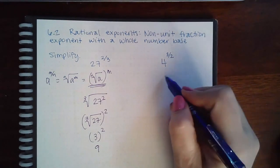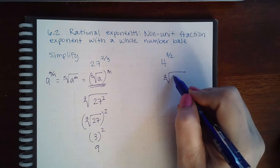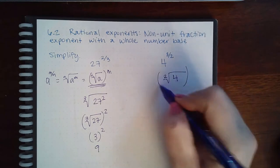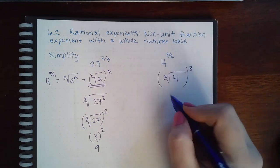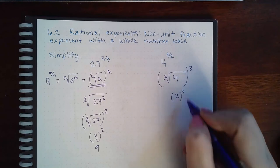When I convert this over, the index is 2, and then the base is 4, and then the power will be 3. So then the square root of 4 we know is 2, and when I cube that I get 8.